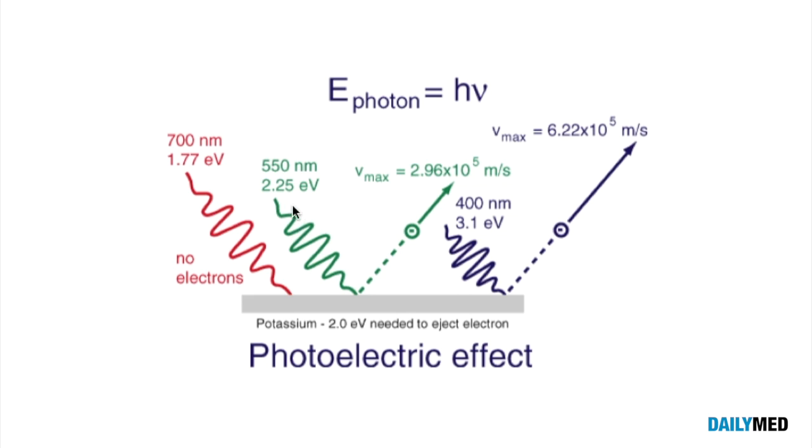Moving on to a more energetic photon, we see that we do overcome that binding energy, and then we eject the electron. The electron has a Vmax of about 3 times 10 to the fifth. Then you move to the more energetic photon,